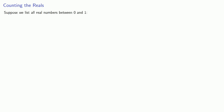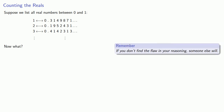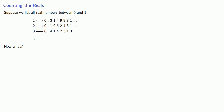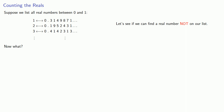Suppose we list all real numbers between 0 and 1. The first number, maybe it's this; the second, this; and so on. If we're listing all the real numbers between 0 and 1, let's see if we can find a real number not on our list.